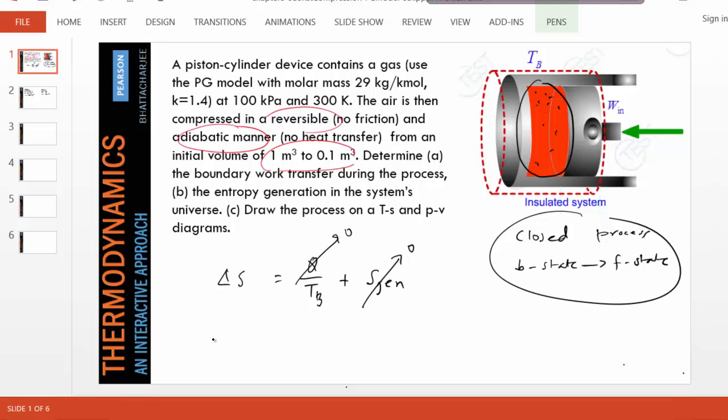So as you can see, delta s, s two minus s one equals zero, which means entropy equals zero, which means entropy equals constant.